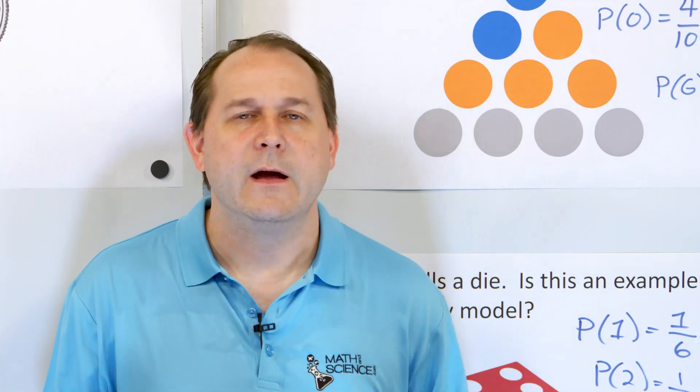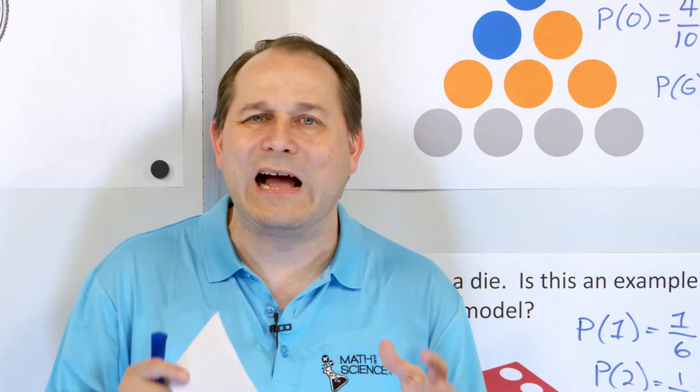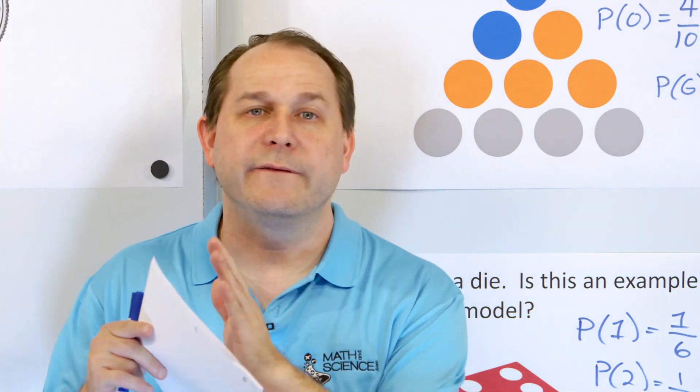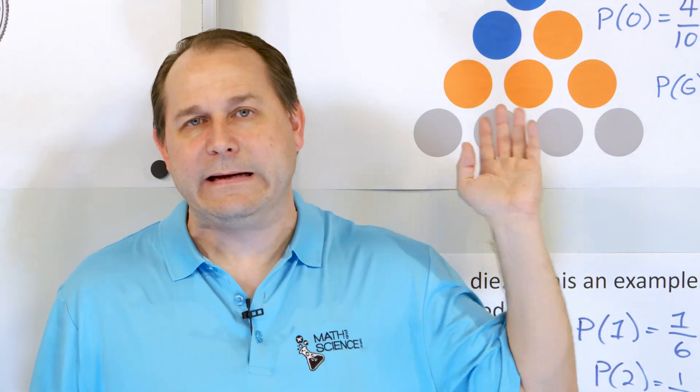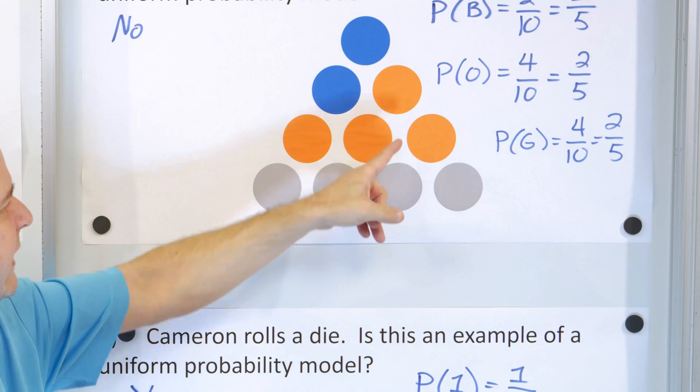We now know how to find probability, but we also want to know what kind of problem we're dealing with. When all of the outcomes of an experiment have equal likelihood, we call it a uniform probability model — like the die and the flipping of a coin. When we have a non-equal number of outcomes, we end up with a non-uniform situation. The next lesson will continue on with uniform probability models. Learn anything at mathandscience.com.